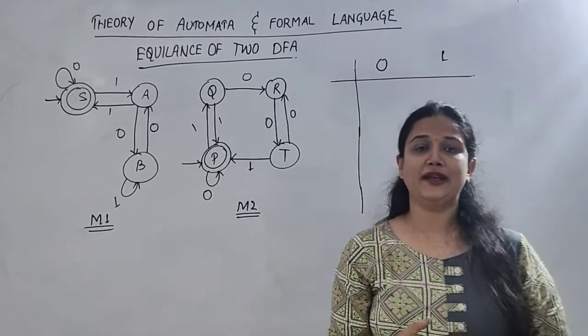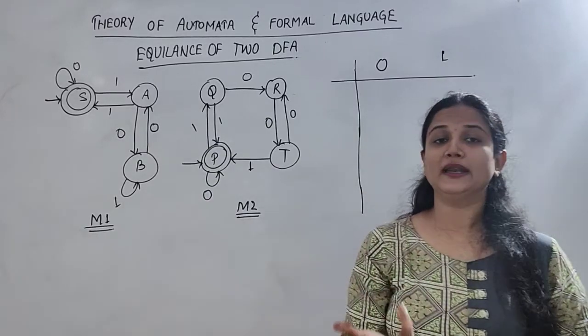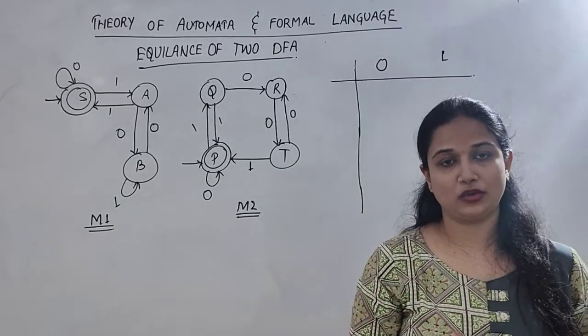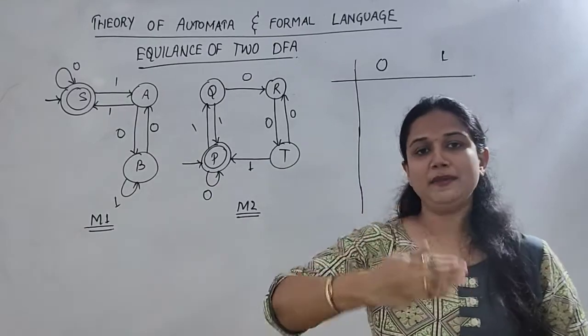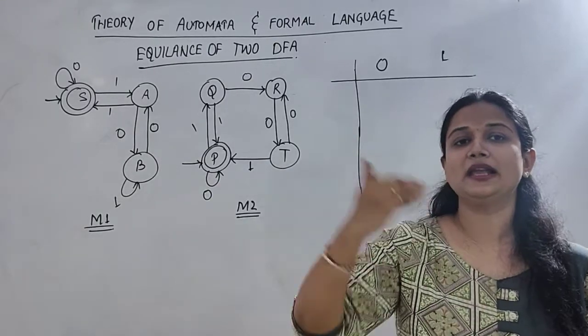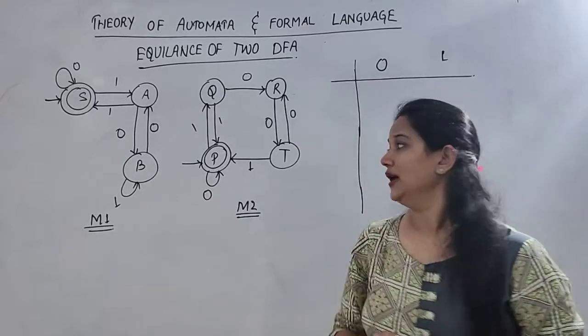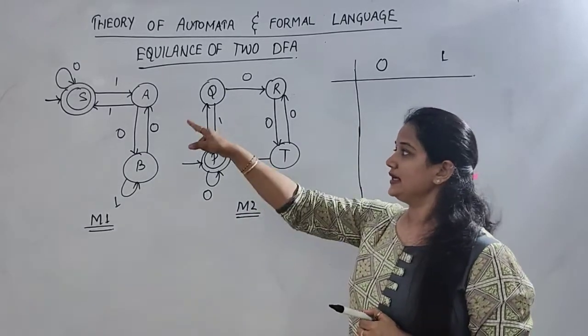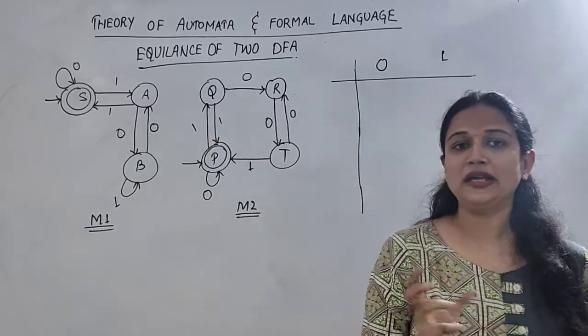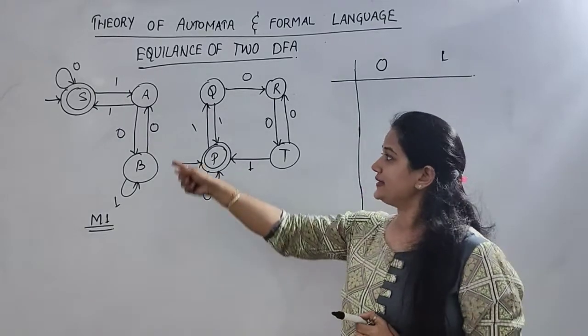Because when we check equality, then we will do one-to-one correspondence, and one-to-one correspondence means element to image. So let's say there is an initial state, so we start mapping from initial state.